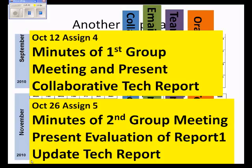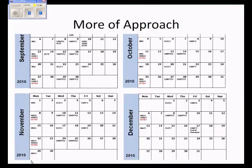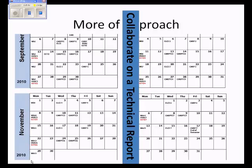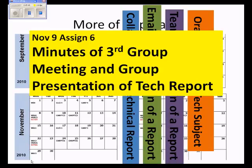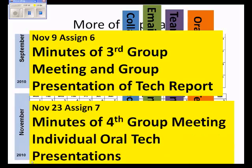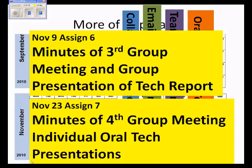Groups could meet and begin the process of preparing a collaborative technical report. Then they could meet again and present an evaluation of that collaborative technical report, and based on the evaluation, they could update it. That would be two of the four assignments.